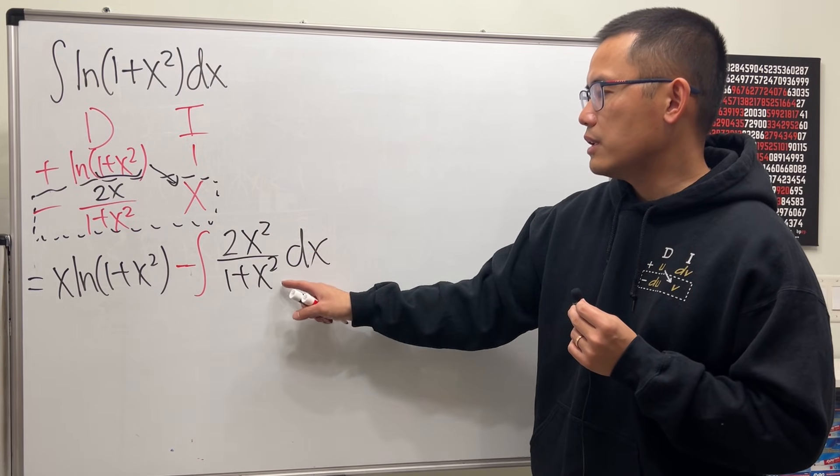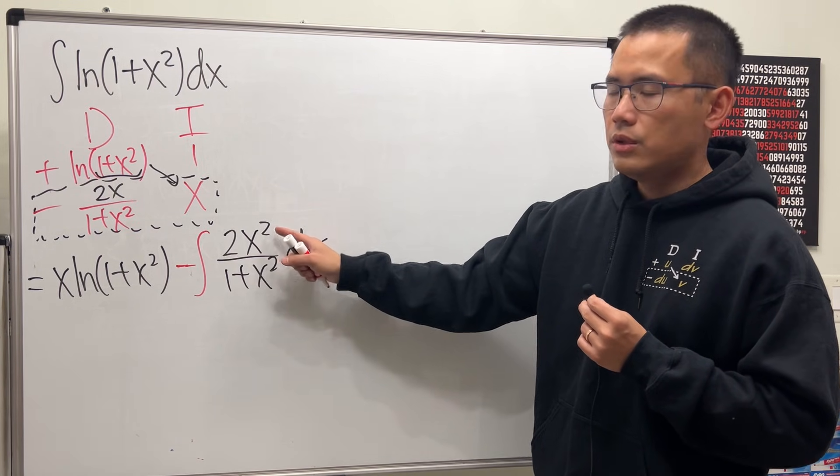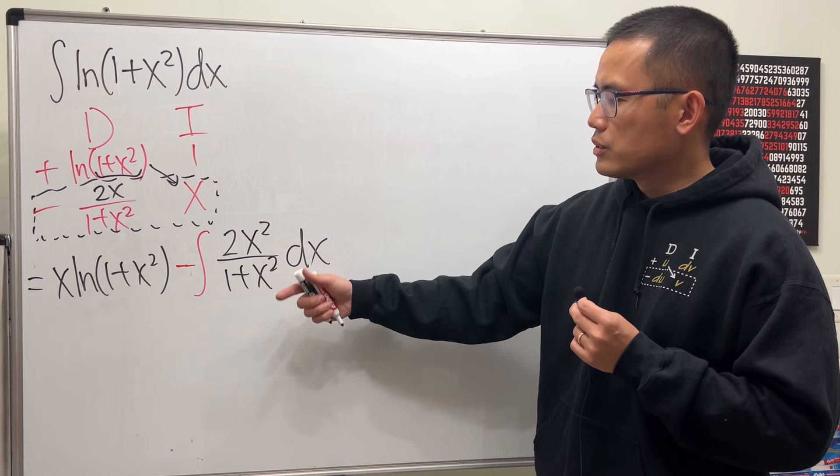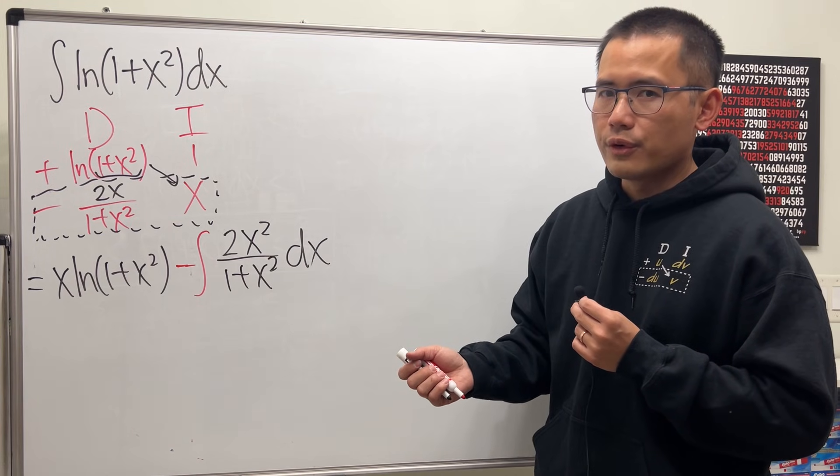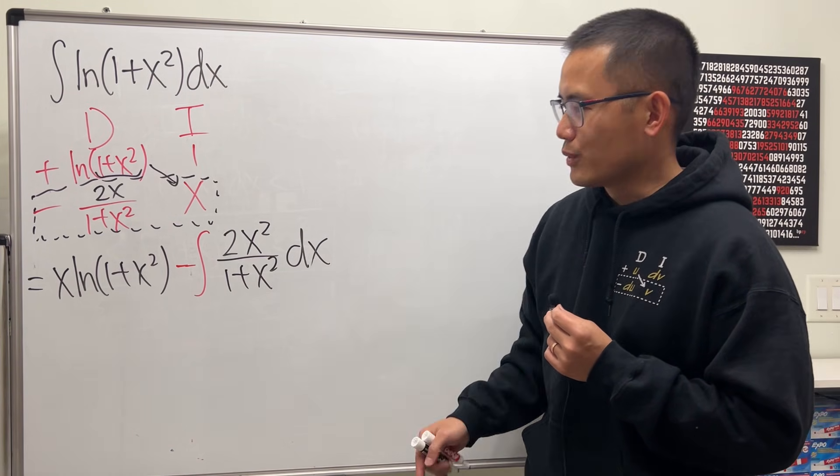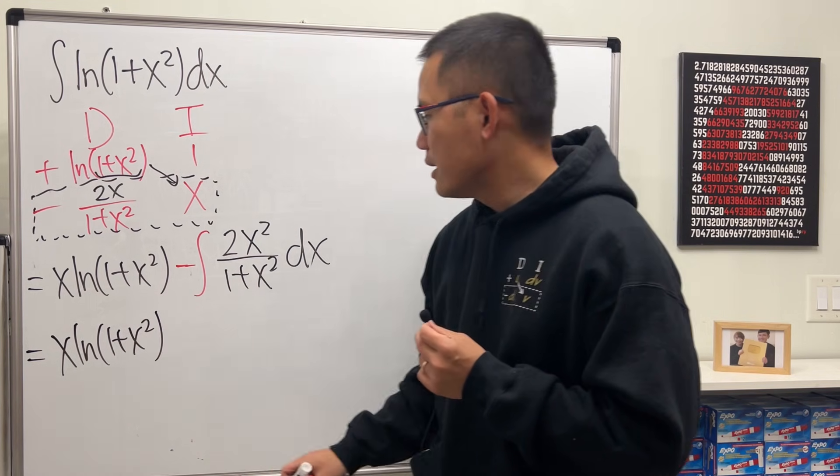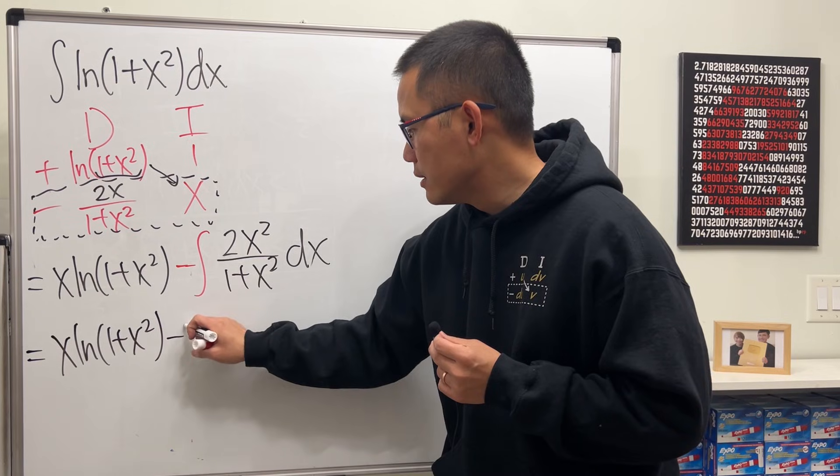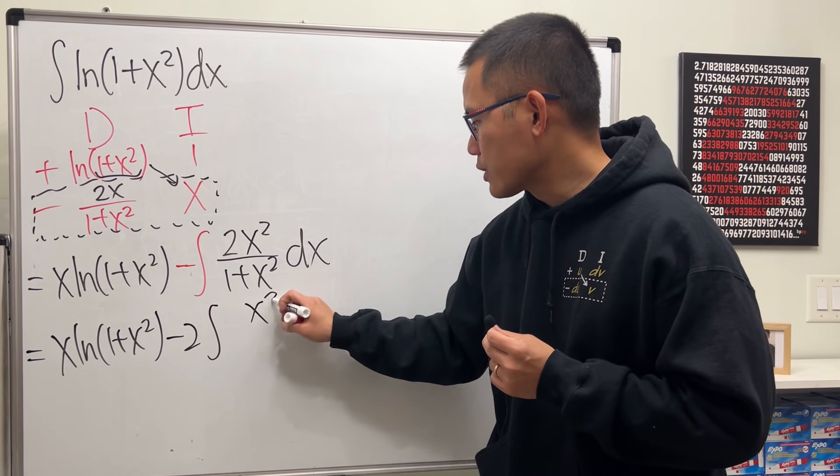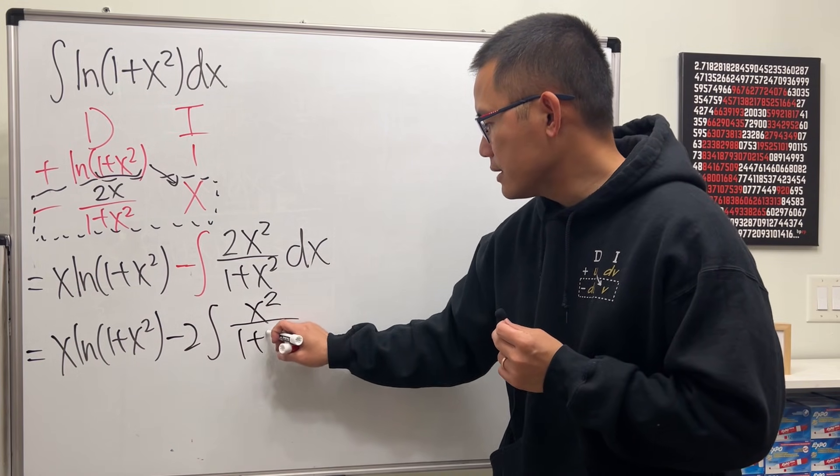Notice this is a rational function, and the degree on the top is 2, same as the bottom. So we can do polynomial long division first, but I will show you guys the following way. Check this out. I'm going to rewrite this right here again, and then I will put the 2 to the front, and then here we have x squared over 1 plus x squared.